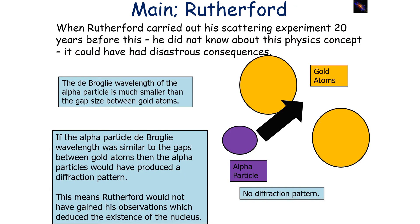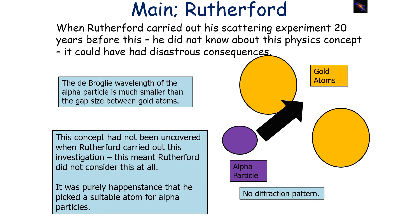It's interesting to note that when Ernest Rutherford carried out his famous scattering experiment 20 years earlier, he didn't know about this physics concept, and it could have had disastrous consequences. He was lucky because the de Broglie wavelength of an alpha particle is much smaller than the gap size between the gold atoms he fired them at. If the alpha particle had a de Broglie wavelength similar to the gaps between gold atoms, the alpha particles would have produced a diffraction pattern.